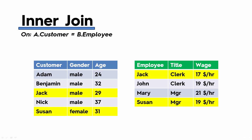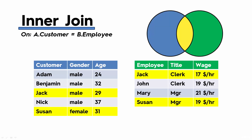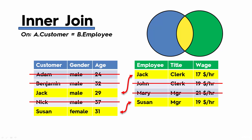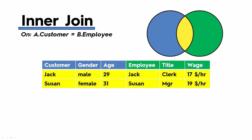An inner join takes the two tables and looks only at their intersection. So if we're joining our tables on customer equals employee, the remaining rows will only be the matching rows. Jack is matched with Jack and Susan is matched with Susan, because we're looking at the customer column in the left table and the employee column in the right table. The unmatched rows are discarded, and the resulting table only contains those matching rows glued together.